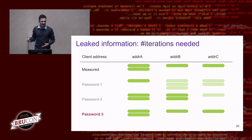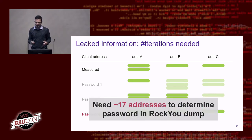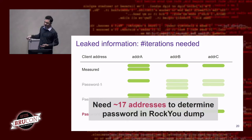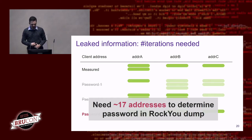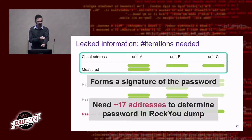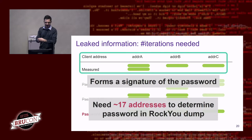To give an idea of how many MAC addresses are needed: using the Rockyou database as reference, to uniquely determine the password, we need to spoof on average only 17 MAC addresses. The intuition is that for every MAC address, we can eliminate roughly half the passwords. The key takeaway is that the number of iterations the access point needs forms a signature of the password, and this signature can be used in an offline brute force attack.